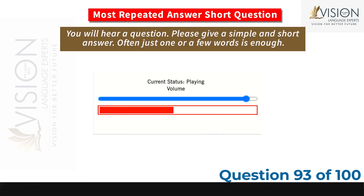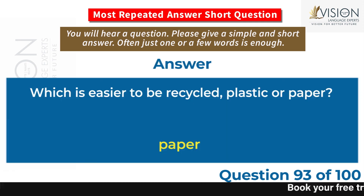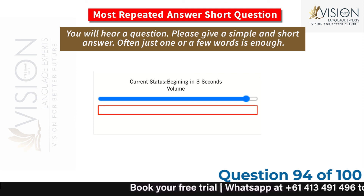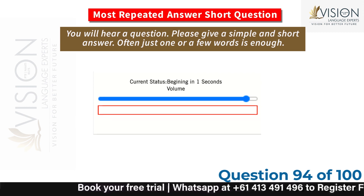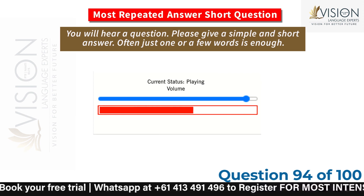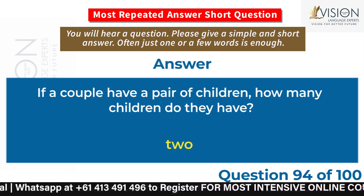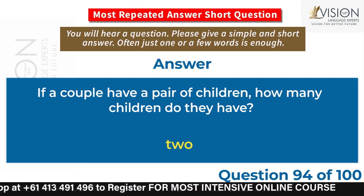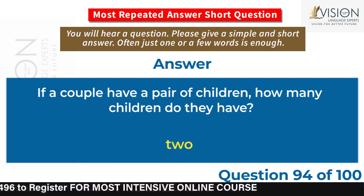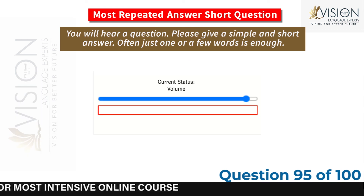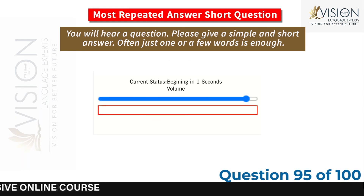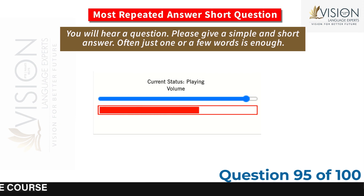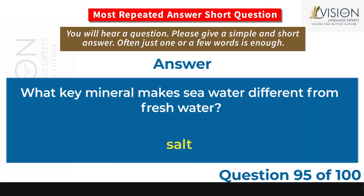Which is easier to be recycled, plastic or paper? Paper. If a couple have a pair of children, how many children do they have? Two. What key mineral makes sea water different from fresh water? Salt.